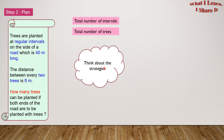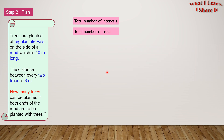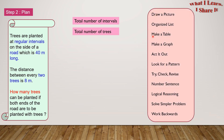Now let's think about the strategies. Here are all the strategies: draw a picture, organize a list, make a table, make a graph, act it out, look for a pattern, try check or revise, number sentence, logical reasoning, solve a simpler problem, and work backwards. For the total number of intervals, we're going to use the number sentence strategy. And for the total number of trees, we're going to use solve a simpler problem.